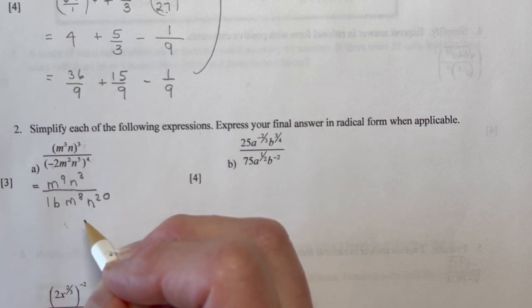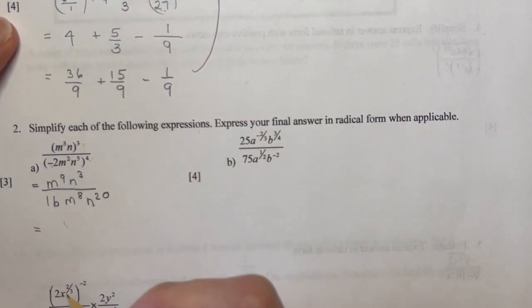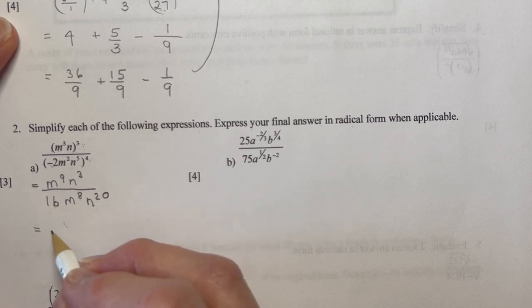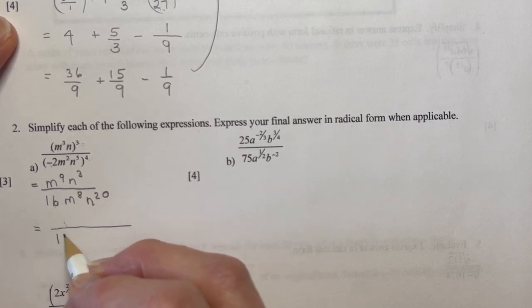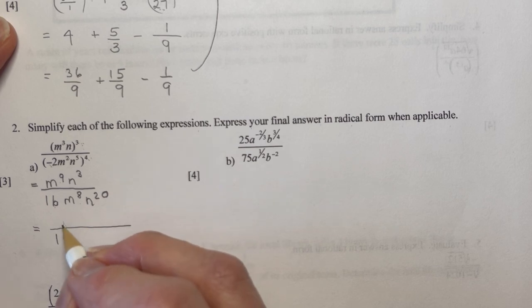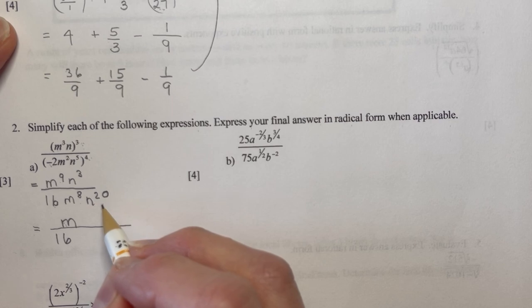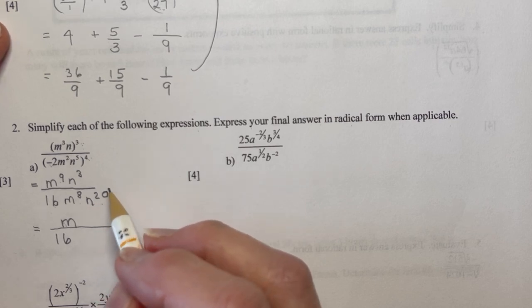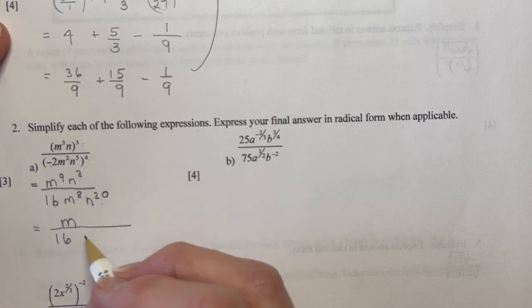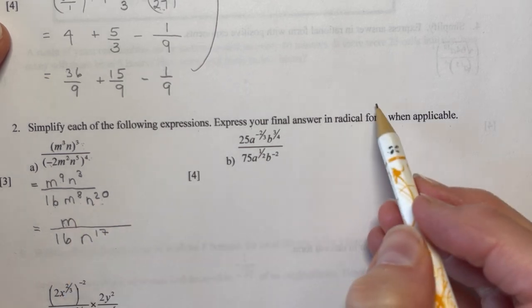Okay, now don't stop there because we still have m's and n's in the numerator and the denominator. I only have one constant here, and that would be 16, which is in the denominator. Leave it there. And now I'm going to do my m's. So I have 9 in the top and 8 in the bottom. So 9 minus 8 is 1m. And I have more n's in the denominator. So in order to keep my exponents positive, I'm going to do 20 minus 3 is going to give me n to the seventeenth power. And that's as far as you can go. And there's no radical form for this.